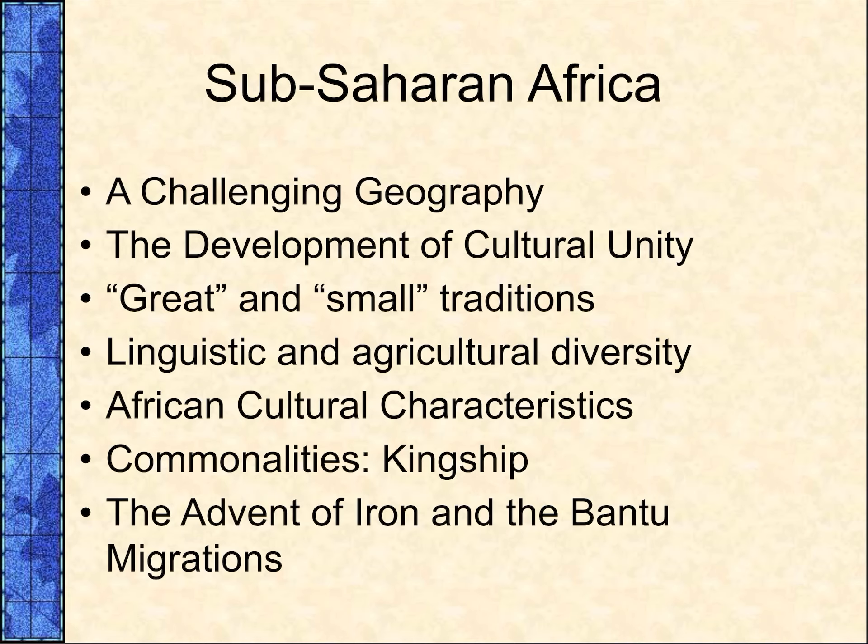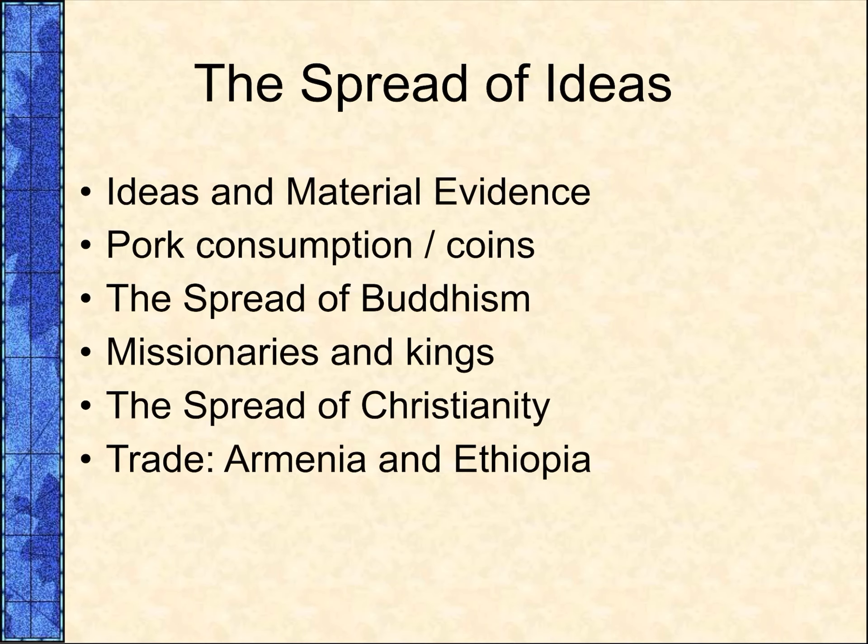Sub-Saharan African culture had its origins near the equator and spread southward. Iron working also began north of the equator and spread southward. Linguistic evidence suggests that the spread of iron and other technology in sub-Saharan Africa was the result of the phenomenon known as the Bantu migrations. The original homeland of the Bantu people was in the area of the border of modern Niger and Cameroon, and evidence suggests they spread east and south through a series of migrations over the first millennium CE.